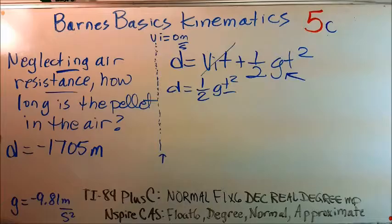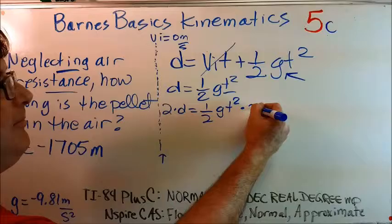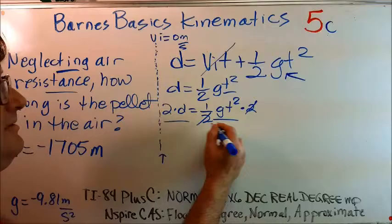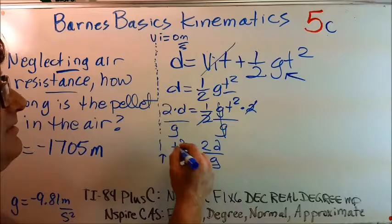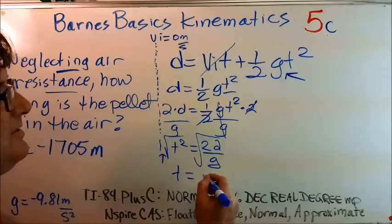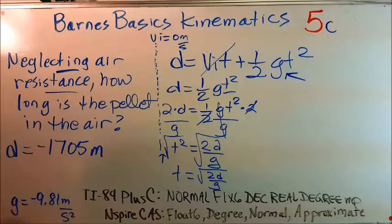Let's solve for time. What I'm suggesting is let's multiply both sides by 2. 2 times d is equal to one half gt squared multiplied by 2. We get rid of the 2 and then let's divide both sides by g. We in effect have t squared is equal to 2d divided by g. And then if we take the square root of both sides, t is equal to the square root of 2d divided by g. And so, that is our working equation.